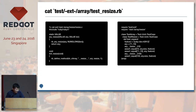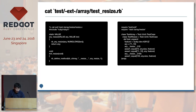The test-ext directory contains C API tests — for example, tests of rb_array_size methods. It's a C API test. If you are a C extension gem author, I recommend running these files.